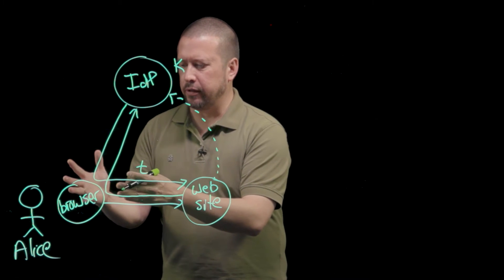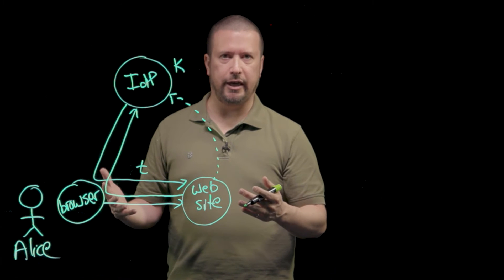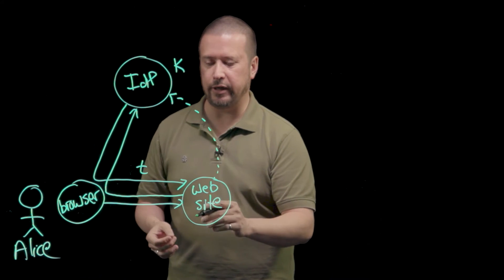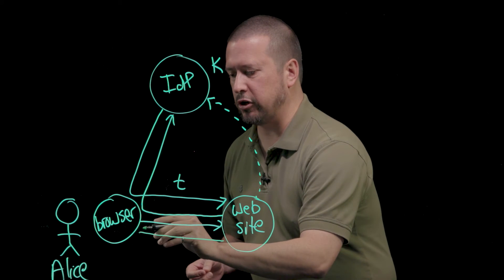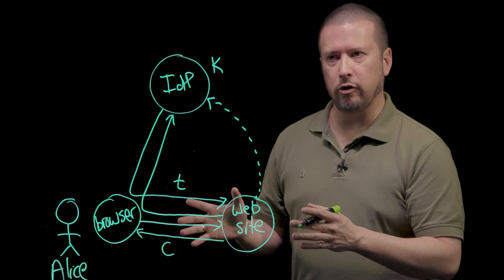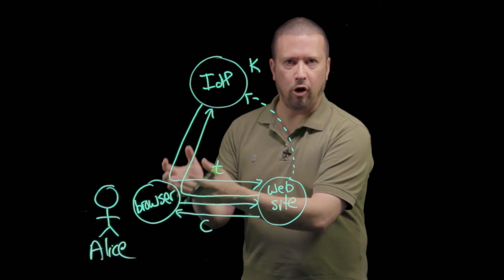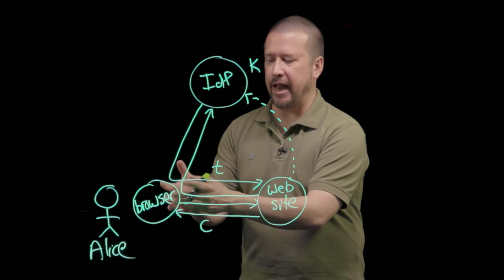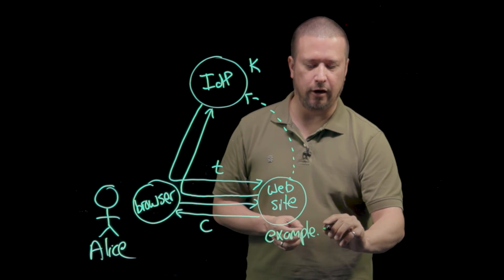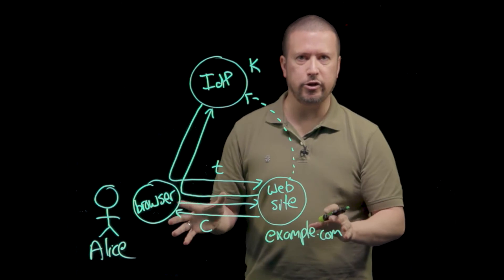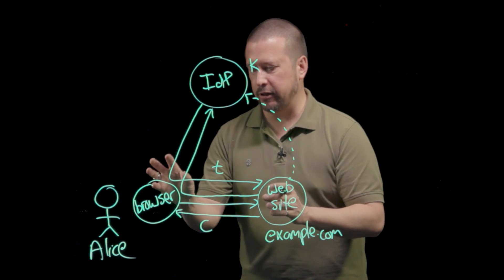Now, how does the website know on subsequent calls from Alice's browser that this is still Alice and she is authenticated? The way that it does this is after it has received the token and signed Alice in, it puts a cookie on Alice's browser. If you're not familiar with HTTP cookies, they are just a piece of information that the website says: browser, please always send this piece of information back to me on every request that you send to this particular host. So for example, if this is example.com, then always send this cookie back to example.com every time you visit it. This establishes a session that Alice's browser has with this website.